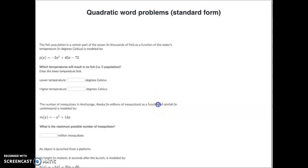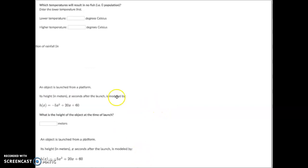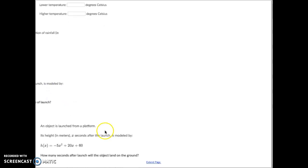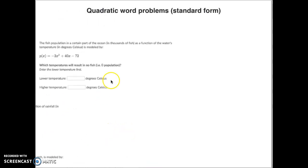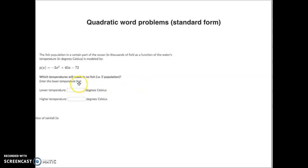Let's get to it right away. Here is our first equation. So we don't get confused, I'm going to move a couple of these off the screen temporarily so you know exactly which one we're working on. Here's our first one. The fish population in a certain part of the ocean in thousands of fish as a function of the water's temperature is modeled by this function. They want to know what is the lowest temperature, what's the highest temperature. Basically what they're asking for is what are your x-intercepts on this.